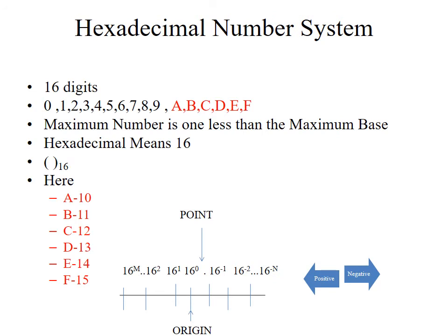The last commonly used number system is the hexadecimal number system. Hexa means 16 digits. It has two parts: the first is digits 0 through 9, which we also see in the decimal number system. After 9, letters are used: A means 10, B means 11, C means 12, D means 13, E means 14, and F means 15. These letters represent digits, so we must remember that F represents 15, E represents 14, and so on. In the diagram, the base is represented by 16.